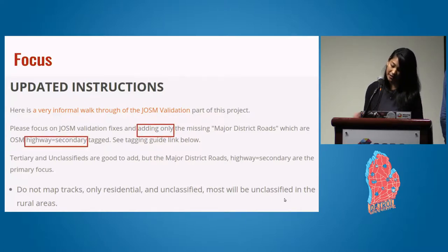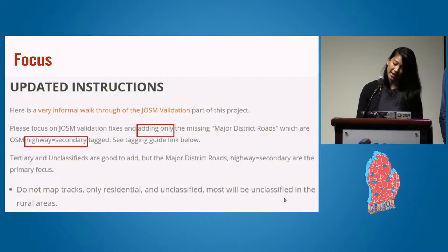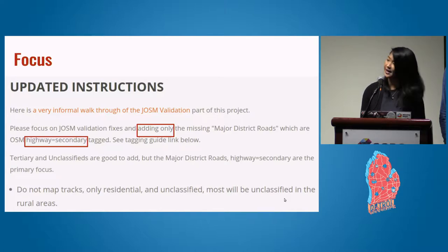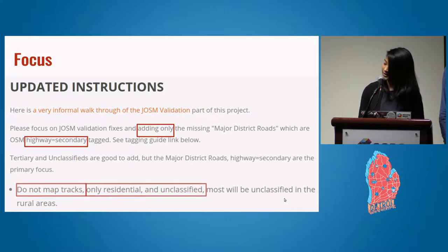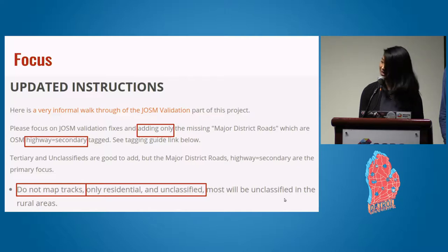Here it says adding only roads with a tag highway equals secondary, and do not map tracks, only residential and unclassified.